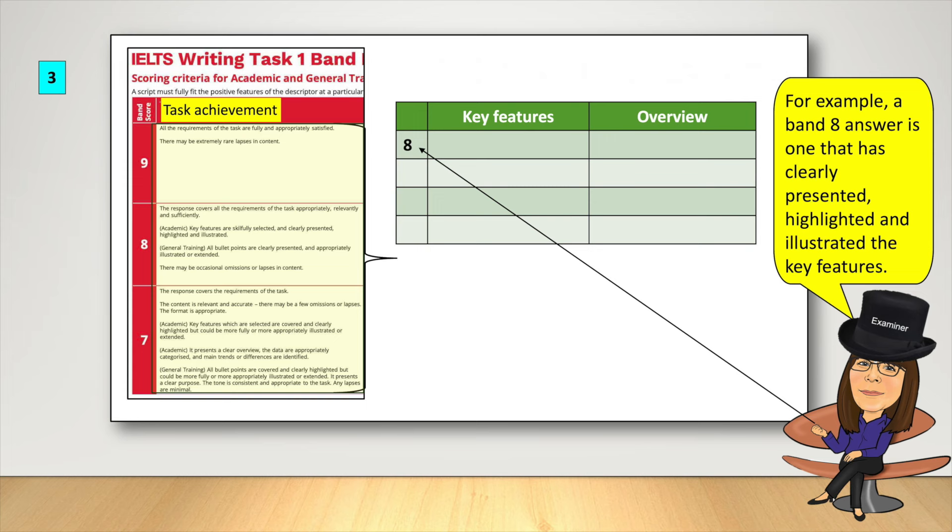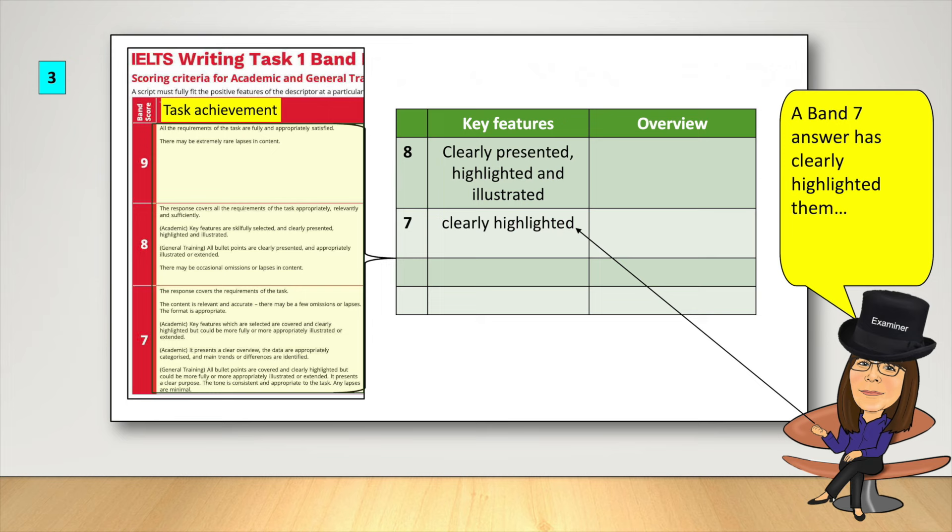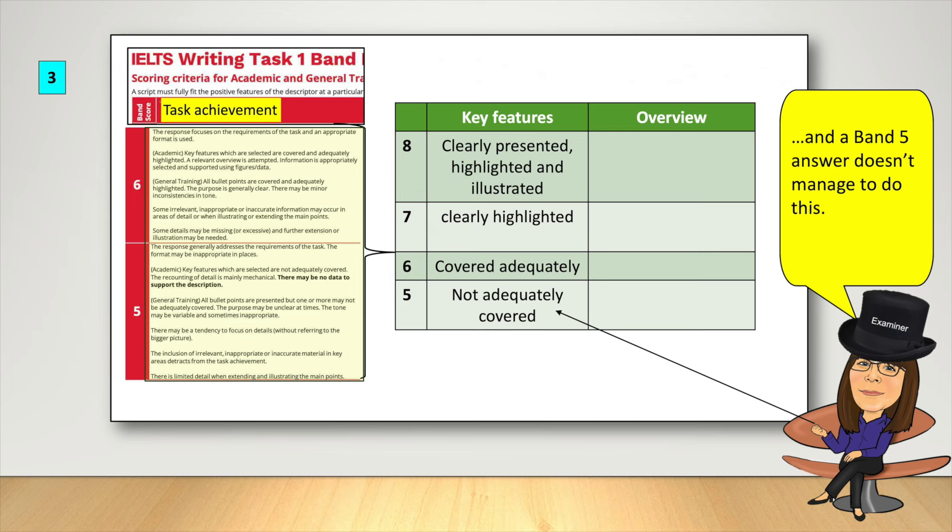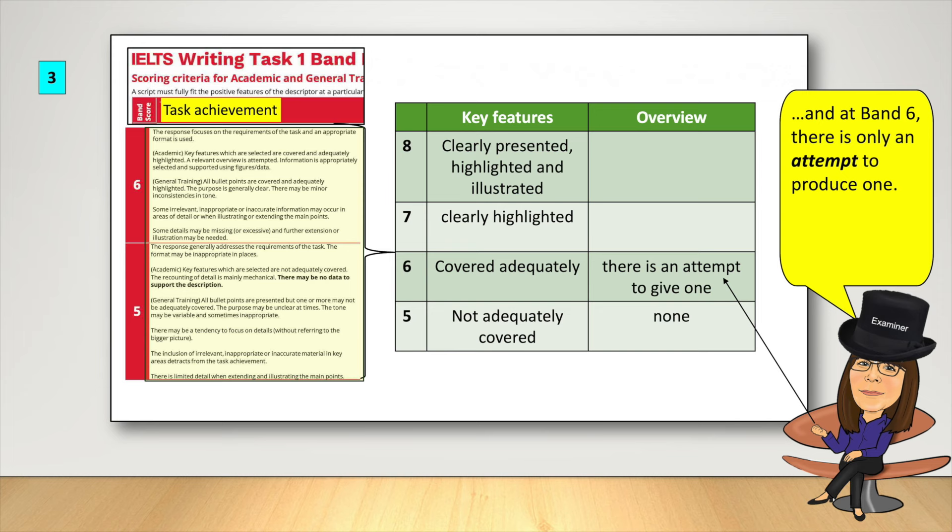For example, a band 8 answer is one that has clearly presented, highlighted and illustrated the key features. A band 7 answer has clearly highlighted them, while a band 6 answer only covers the key features adequately. And a band 5 answer doesn't manage to do this. At band 5 or below, there is no overview. And at band 6, there is only an attempt to produce one. It's only at band 7 that the overview is clear.